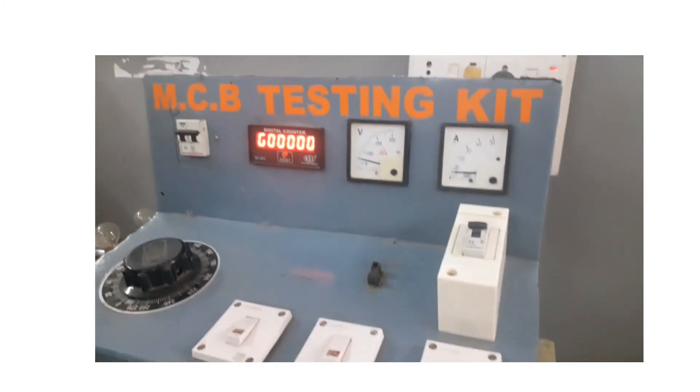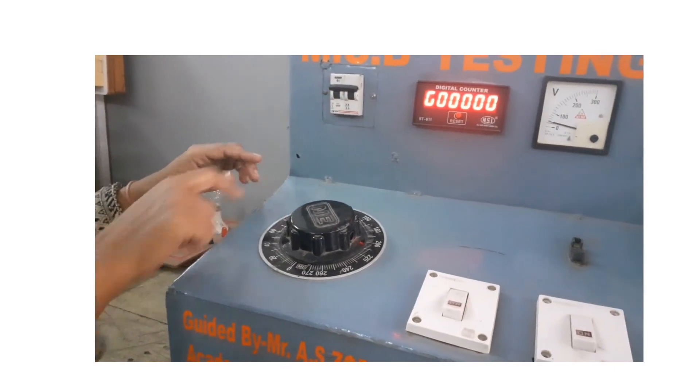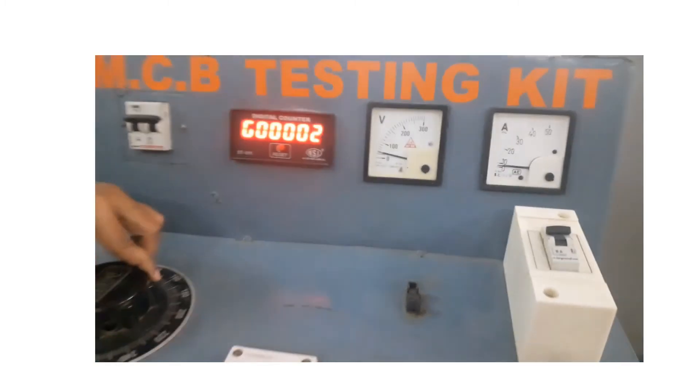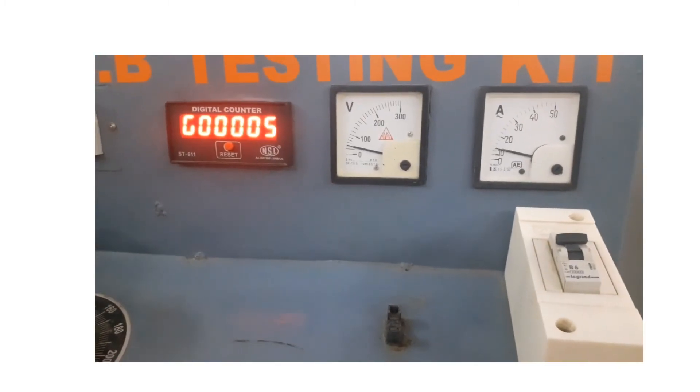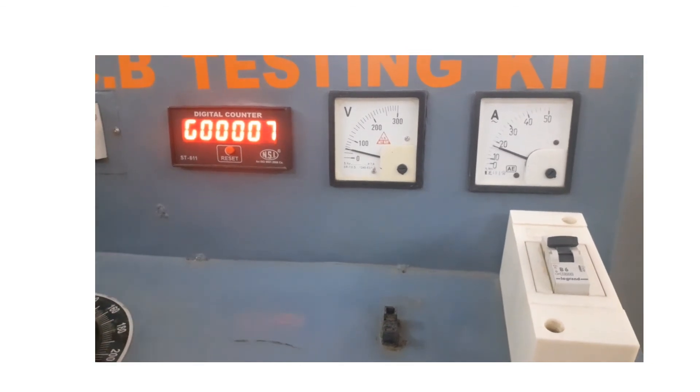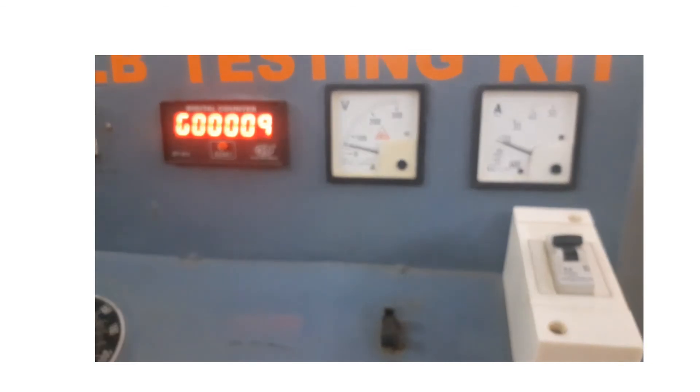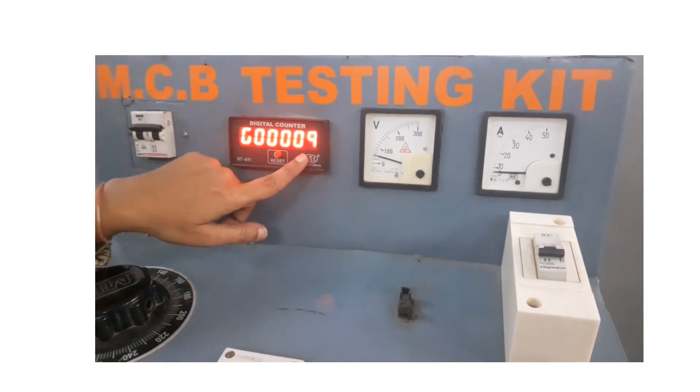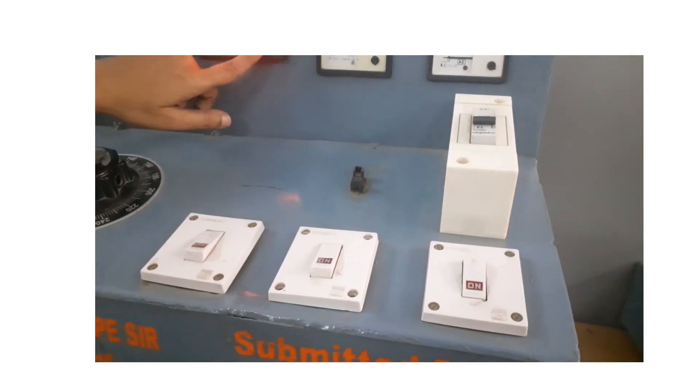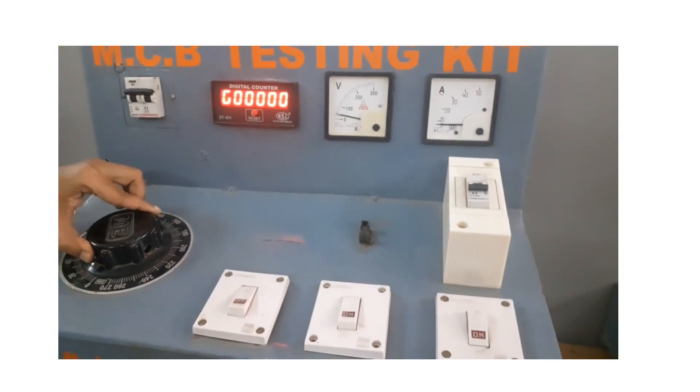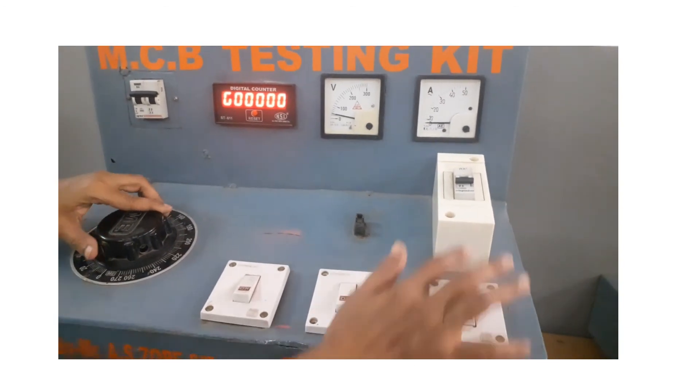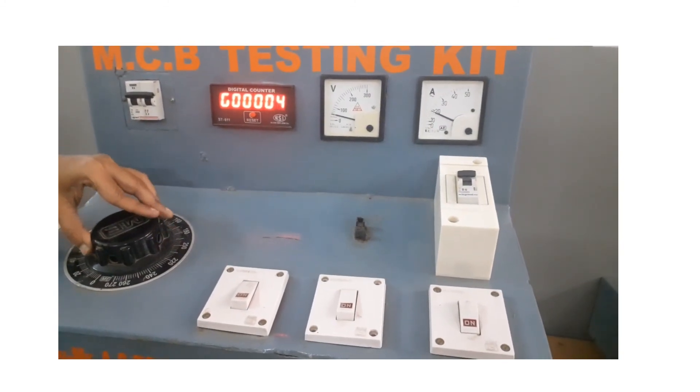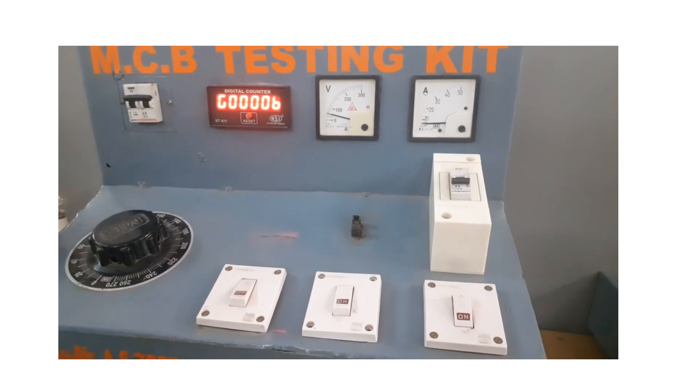I am going to set here 18 ampere current and when 18 ampere current flows through the system what happens just see. So second reading is whenever we are allowing 18 ampere current it is 3 times that of rated value 3 IN. So at that time it trips within 9 seconds.